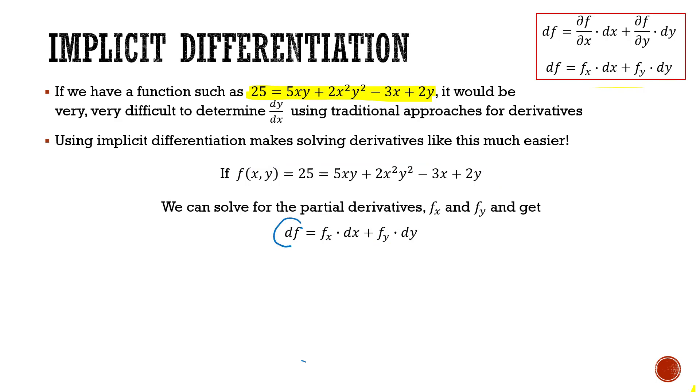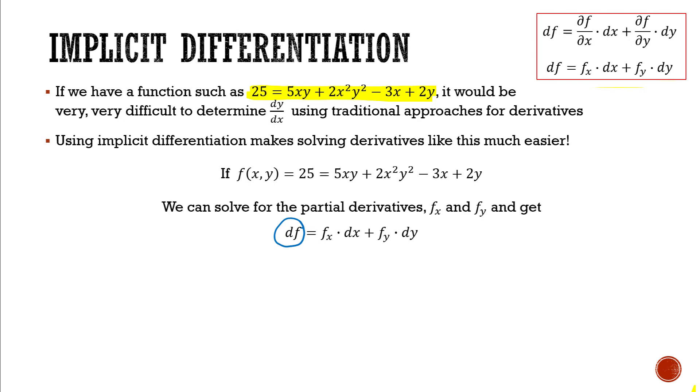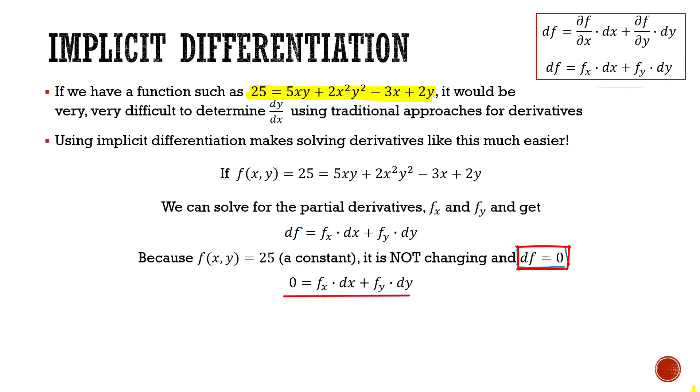Now what is this differential df going to be? What is the value of that differential going to end up being? Well let's remember that f of xy is equal to 25. It's a constant, therefore it's not changing at all. So this change, this df value, this change ends up being equal to 0. Because f of xy is a constant, that differential for f ends up being equal to 0. So we can rewrite this as 0 is equal to f sub x dx plus f sub y dy.